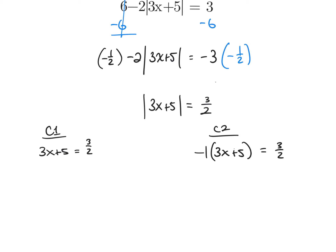This is like hypotheses in science. The first test: we hypothesize that 3x plus 5 is already positive. The second case: we hypothesize that it is negative. If something is negative and needs to become positive, it must be multiplied by negative 1, which is why we place the negative 1 in front. Now it's just a matter of solving these two equations.